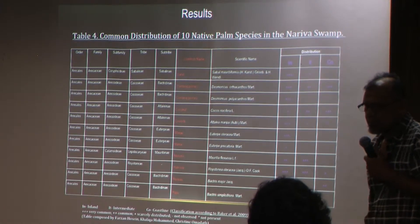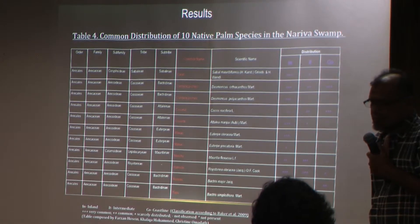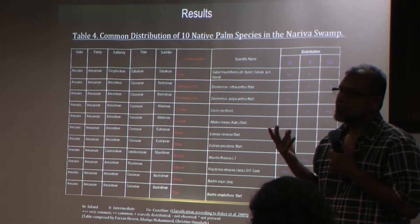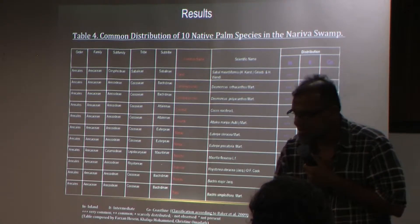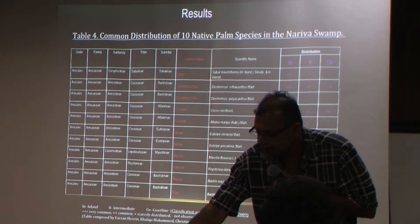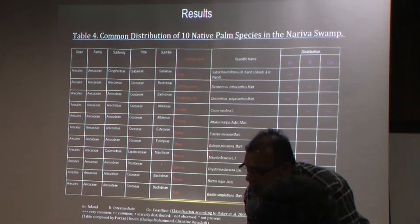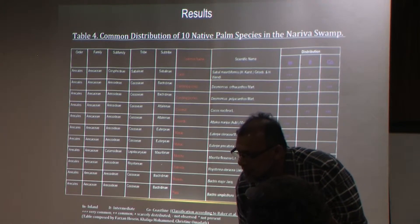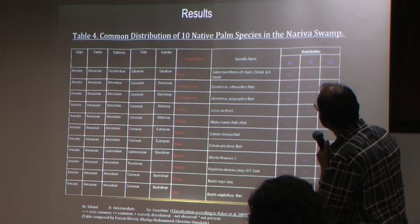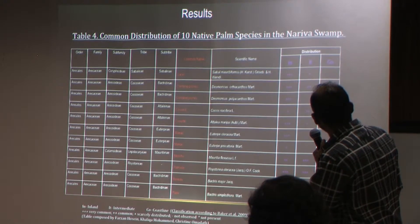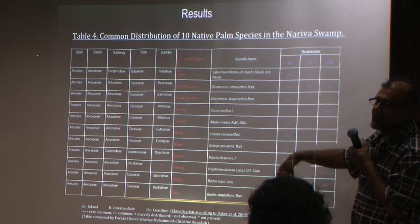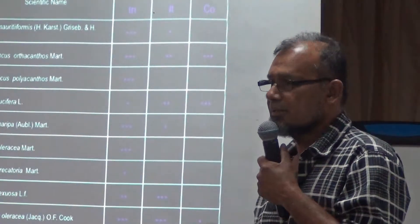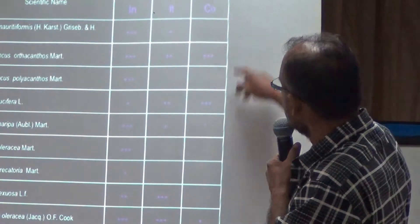To determine the distribution of the palm species in the swamp, we divided the swamp into three areas. We have the distribution in respect to the interior part of the swamp — coastline, intermediate, and inland. Most of the palm species are focused within the inland area, while coconut are mainly on the coastline.